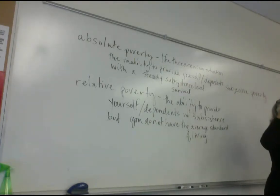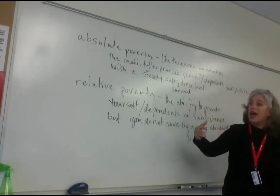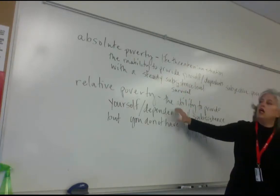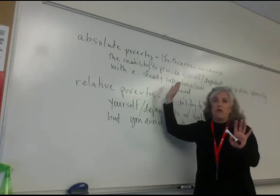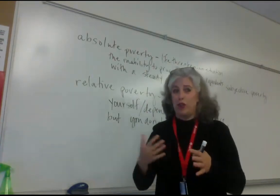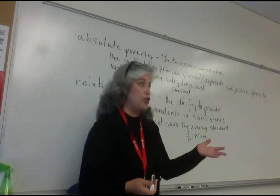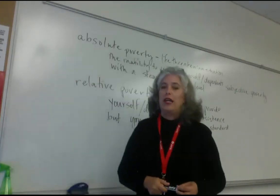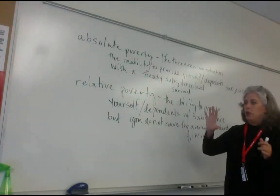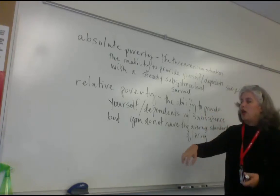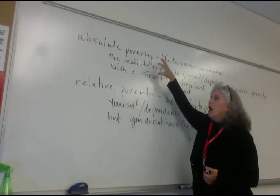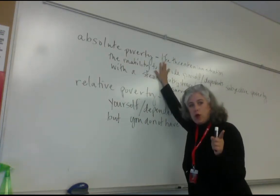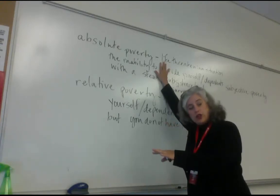In the United States we have a lot of safety nets — government programs like food stamps, Medicaid, housing vouchers, plus food banks run by churches, homeless shelters, soup kitchens — that are in place specifically to help our population never experience absolute poverty. That's why relative poverty is the most common type here.